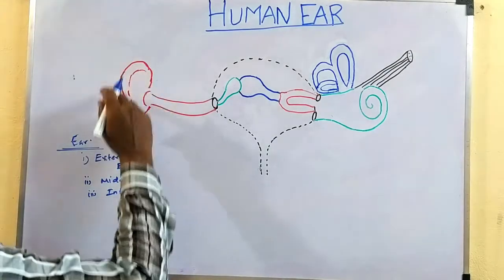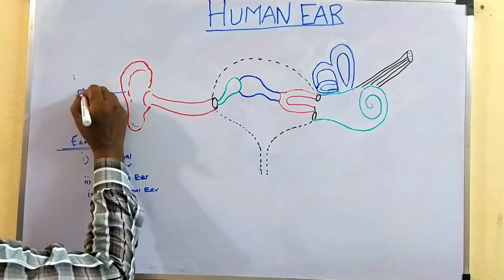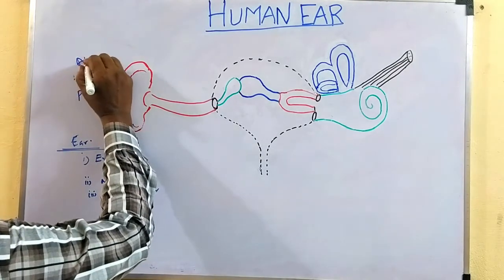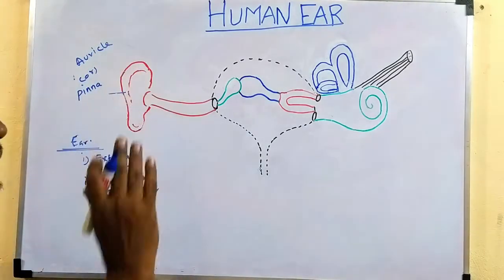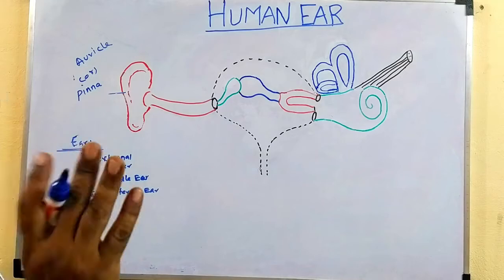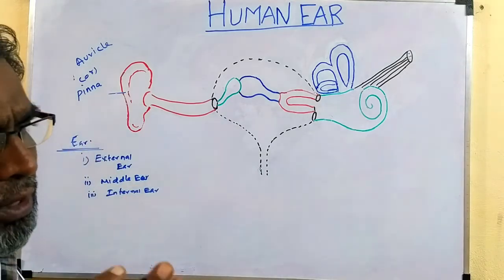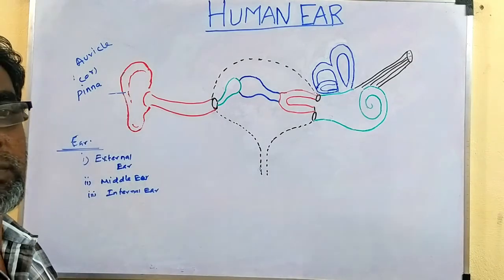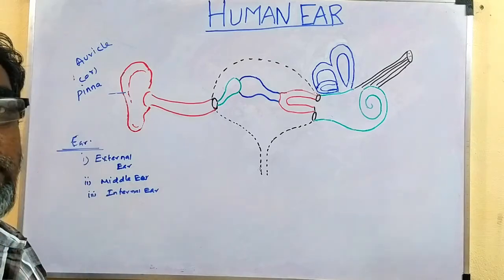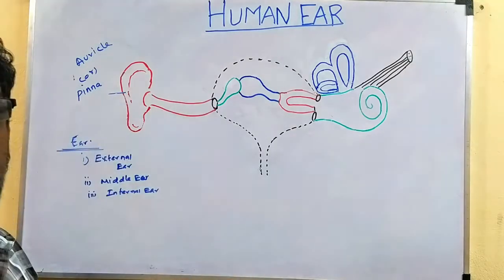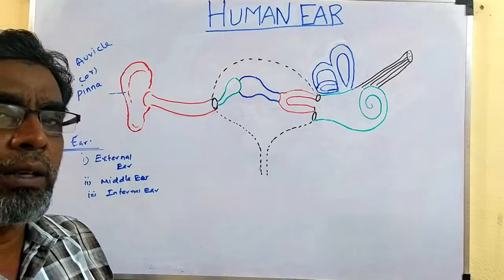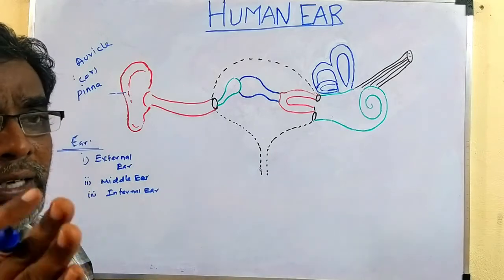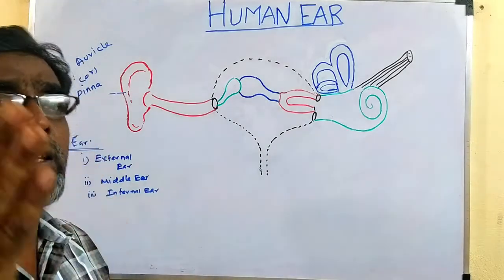The outer structure, the visible reticular part, is called pinna, otherwise called auricle. This pinna is made up of auricular muscles and is immovable. The presence of pinna is a characteristic of mammals. No other group has pinna. Mammalian characters include presence of pinna, presence of hair, and presence of mammary glands — these three are important characteristics of mammals.